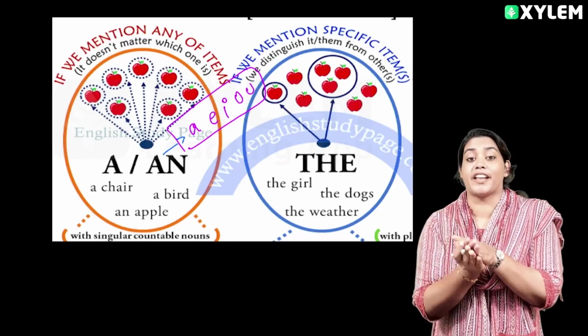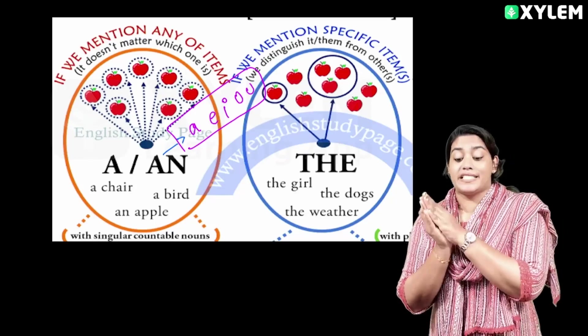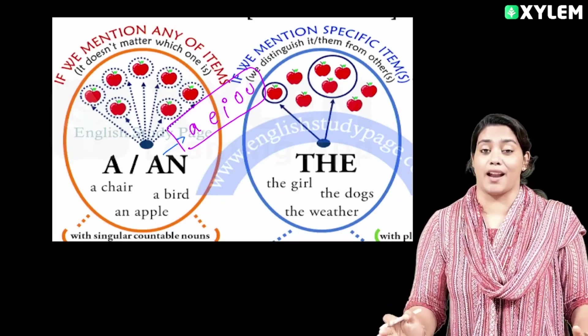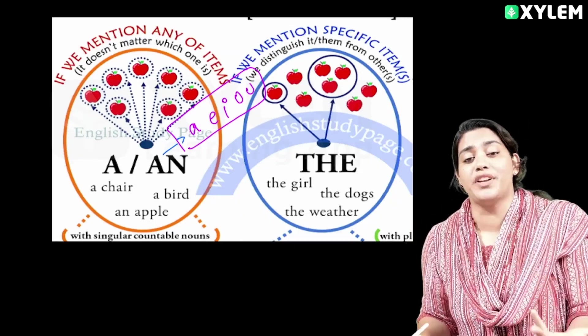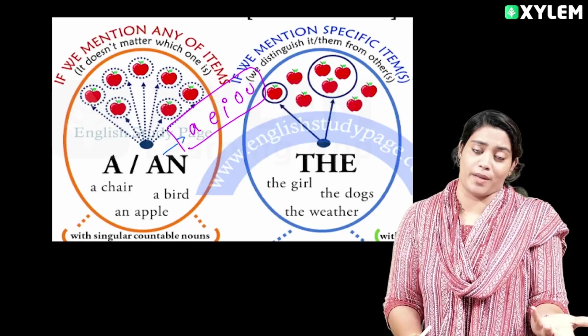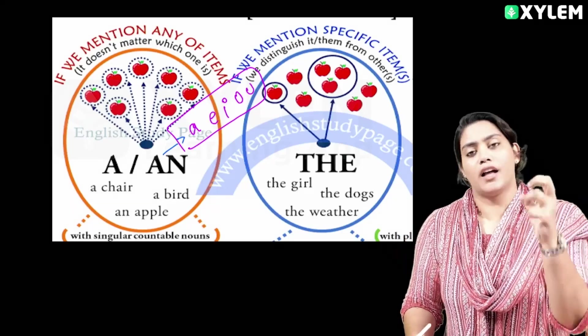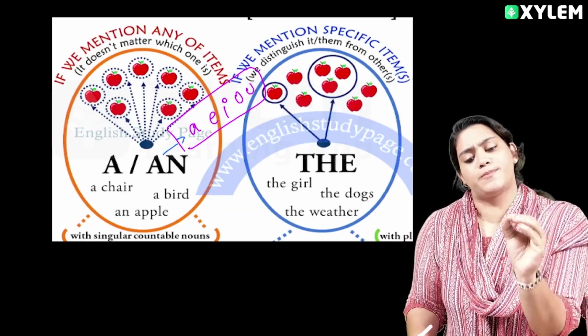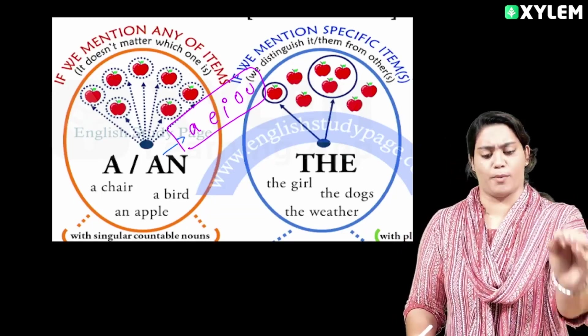Next one is the definite article. What is that? It is 'the'. We use 'the' for a specific item.